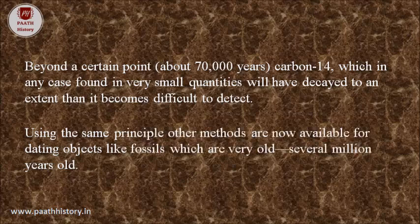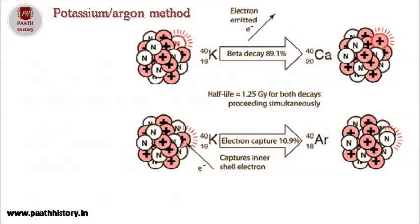Using the same principle, other methods are now available for dating objects like fossils which are very old — several million years old. One important method is the potassium-argon method, which is usually used to estimate the age of fossils.